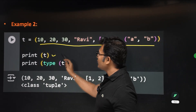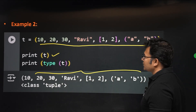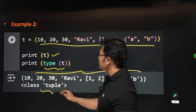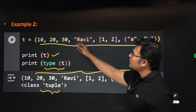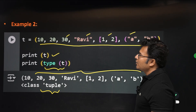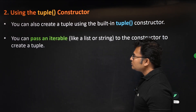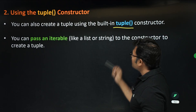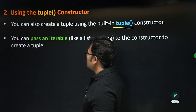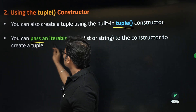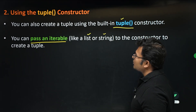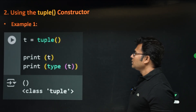When you print t, everything will be printed as given, and type(t) will confirm it is a tuple. Inside a tuple there can be integers, strings, lists, and even nested tuples — all of these are possible. You can also create a tuple using the built-in tuple() constructor by passing an iterable like a list or a string.